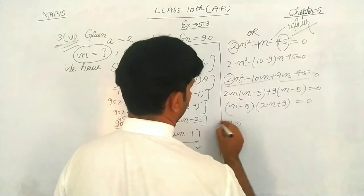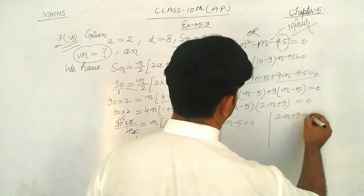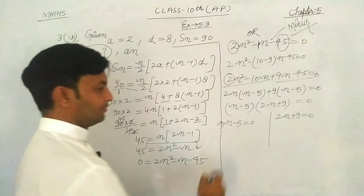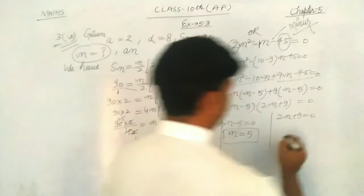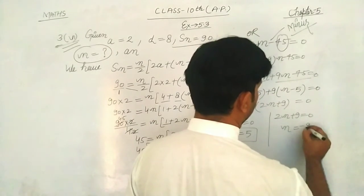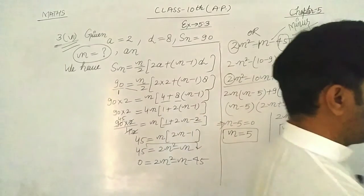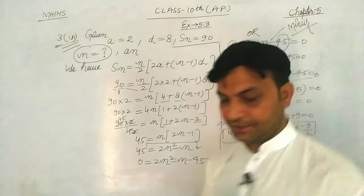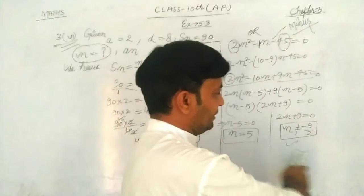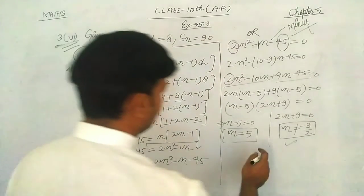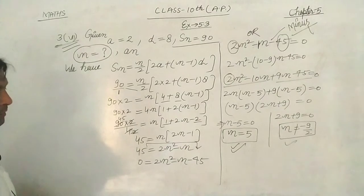So we get (n minus 5)(2n plus 9) equals 0. From n minus 5 equals 0, n equals 5. From 2n plus 9 equals 0, n equals negative 9 over 2, which is not possible because the number of terms can never be negative. Therefore n equals 5.